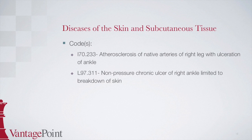At the beginning of category L97 is a note which states: code first any associated underlying condition, such as atherosclerosis of the lower extremities. So again, the book is guiding us in the code sequence.